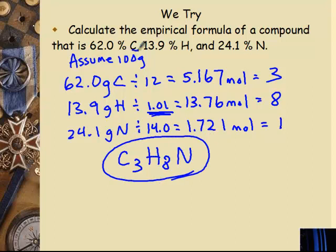So it is C3H8N. So again, the order listed in the problem, C then H then N. So C3, because it's 3 to 8 to 1 mole ratio of carbon to hydrogen to nitrogen. So that's an empirical formula.